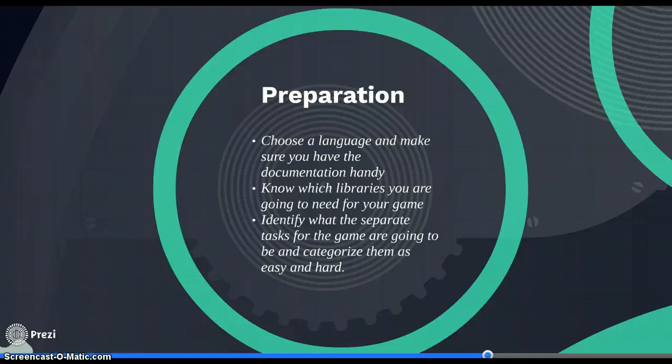What are the different things we have to do? I have to have two paddles independently controlled by a player. There's a ball that has to move on its own and resolve collisions with the walls and the player's paddles. If the ball exits the screen, update the score, relocate the ball, and determine if the game is over. And maybe you want to show a score.